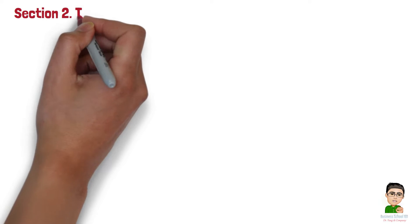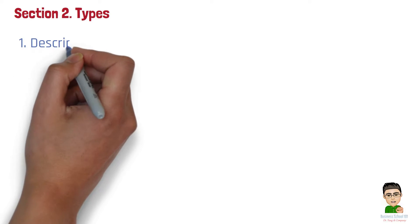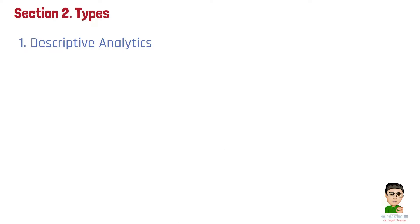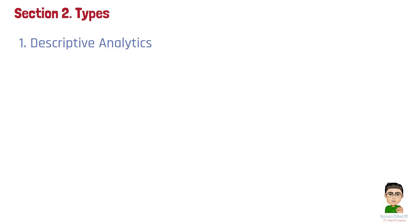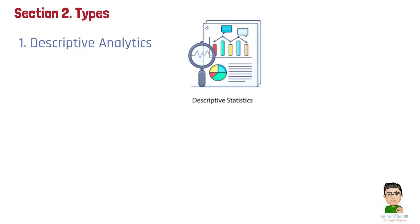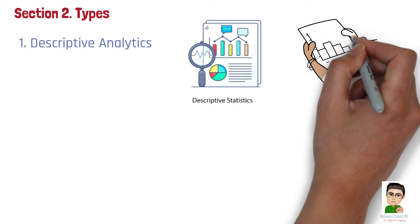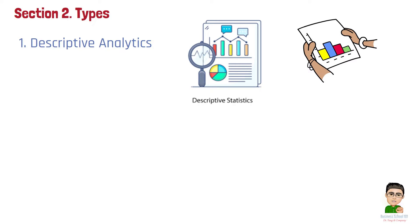Section 2: Types. Generally, data analytics can be categorized into four main types. Type 1: Descriptive analytics. This type of analytics answers the question 'what happened?' by summarizing historical data. It's often the first step in data analysis, providing a clear picture of past performance. For example, a company might use descriptive analytics to generate monthly sales reports, showing how much of each product was sold and identifying trends over time.